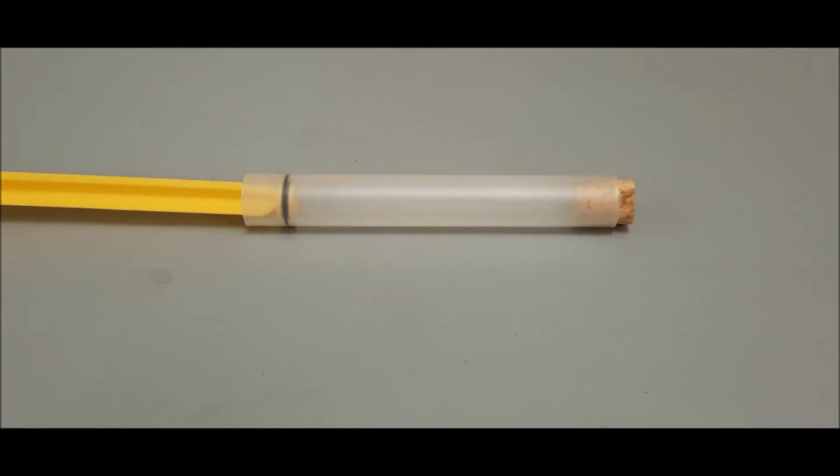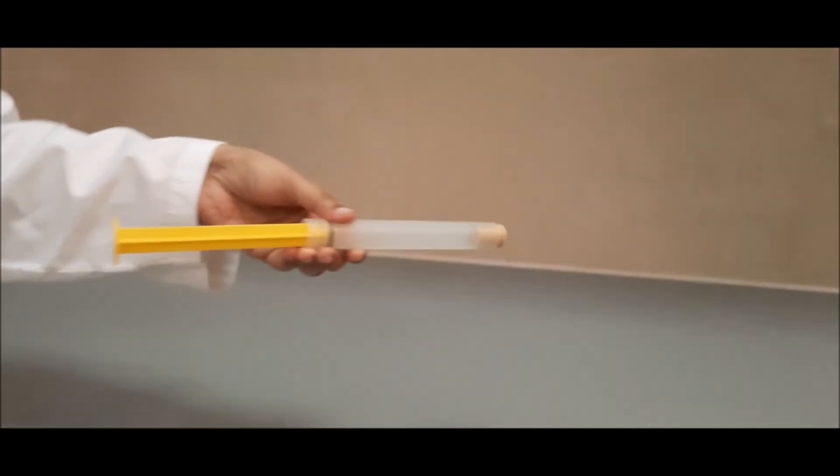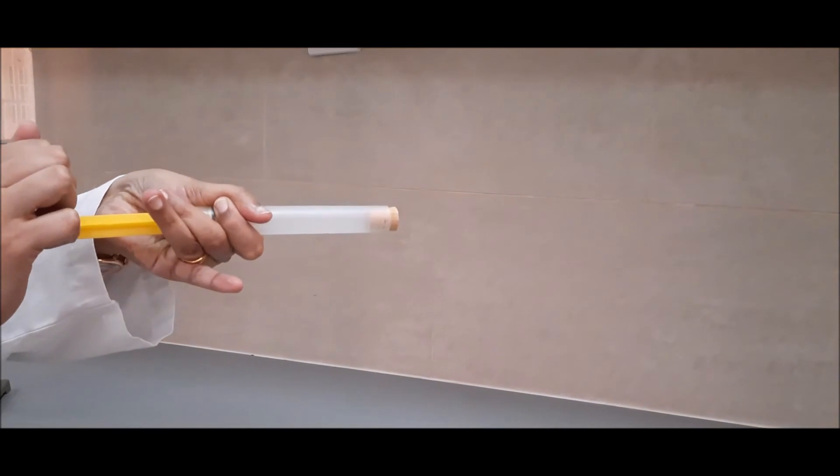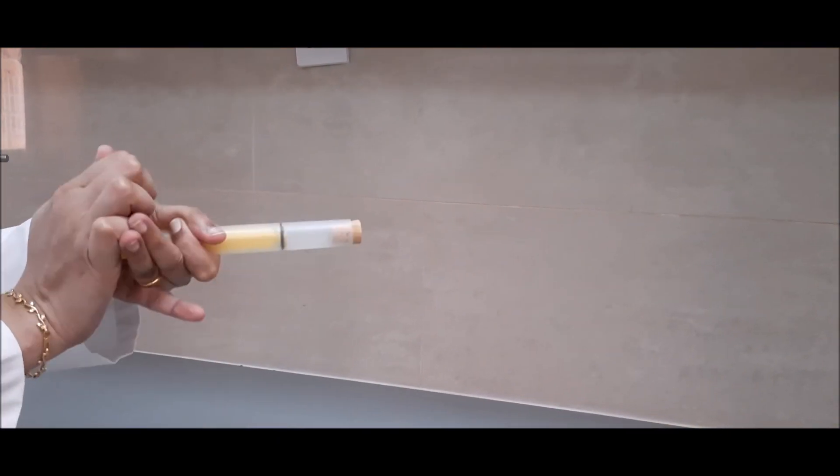So we'll put the cork stopper at the end of the plunger. And we will compress the air inside until the cork stopper pops.